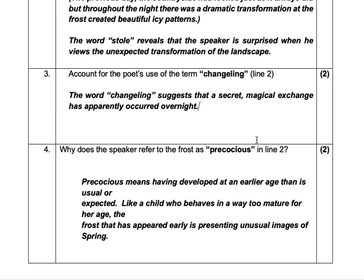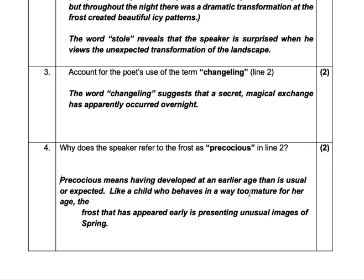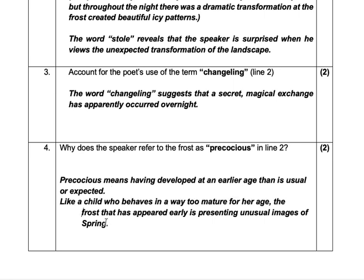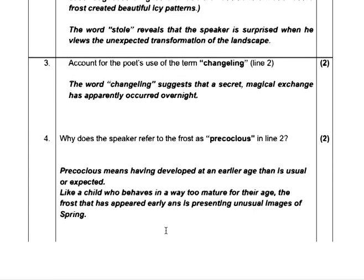Question four: why does the speaker refer to the frost as 'precocious' in line two? 'Precocious' refers to something that is developed at an early age in an unusual way — like a child who behaves in a way too mature for their age. The frost has appeared too early and is presenting unusual images of spring.